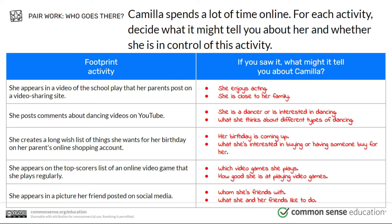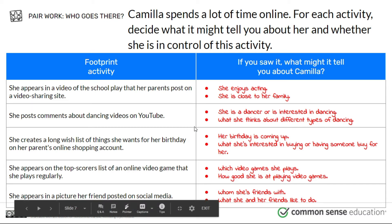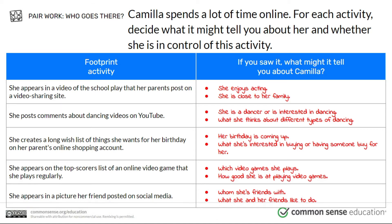She appears in a video of the school play that her parents post on a video sharing site. We might infer that she enjoys acting or that she is close to her family. How much control does she have over this? She posts comments about dancing videos on YouTube — we can infer she is a dancer or interested in dancing, and can tell what she thinks about different types of dancing. She also creates a long list of things she wants for her birthday on her parents' online shopping account — we can infer her birthday is coming up and what she's interested in.